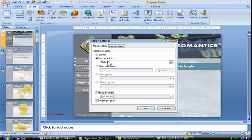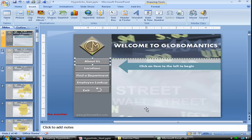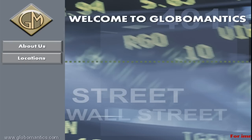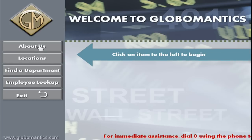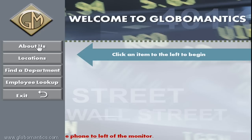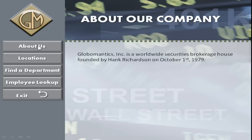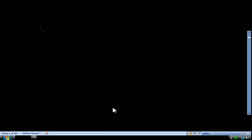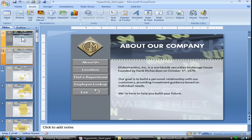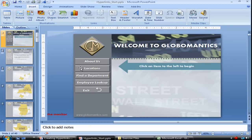Mouse click, hyperlink to slide 2 — go ahead and click OK. In our presentation view, if we launch that show, once our animations are finished, if we hover our mouse over the About Us button, a little hand appears telling us we can click on that option. And when we do click, our PowerPoint presentation jumps to slide number 2. Let me press Escape to go back, and let's go back to slide 1 and finish creating actions for the rest of our buttons.